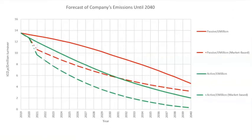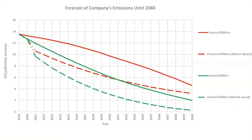Active emissions reductions account for things like reducing the distance travelled in the company's vehicles by about 5% each year, and also accounting for site energy audits.